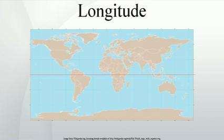The measurement of longitude is important both to cartography and for ocean navigation. Mariners and explorers for most of history struggled to determine longitude, and finding a method took centuries, resulting in the history of longitude recording the effort of some of the greatest scientific minds. Latitude was calculated by observing with a quadrant or astrolabe the altitude of the Sun or charted stars above the horizon, but longitude is harder. Amerigo Vespucci was perhaps the first European to proffer a solution, after studying the problem during his sojourns in the New World. By comparing the positions of the Moon and Mars with their anticipated positions, Vespucci was able to crudely deduce his longitude.